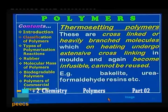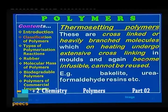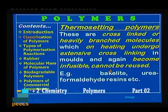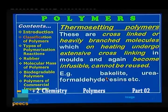Next is thermosetting polymers. These are cross-linked or heavily branched molecules which on heating undergo extensive cross-linking in molds and again become infusible. So they cannot be reused again — they cannot be recycled. Examples are bakelite and urea formaldehyde resin.